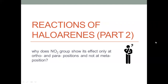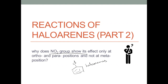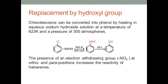In this video, this is part two of my first video on reactions of haloarenes. We have seen why haloarenes are less reactive towards nucleophilic substitution reactions than haloalkanes in my first video. Now in this video, let's look at how nucleophilic substitution reactions will take place on halobenzene — that is haloarenes — and look at the answer for this important question: why does the presence of a NO2 group show its effect only at ortho and para positions and not at meta positions?